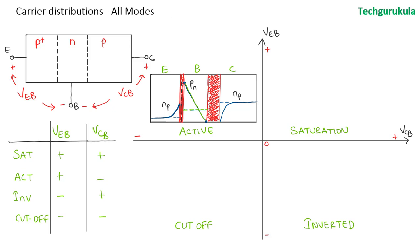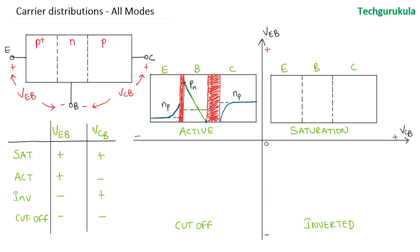Now coming to the saturation region, both the junctions are forward biased, hence the depletion width would be small at both junctions. Equilibrium minority carrier concentrations would be like this, with the dotted line shown here. Under bias condition, we would have the carrier concentration in the emitter similar to that of active. And in the collector region, as this junction is forward biased, there would be a higher concentration of electrons at the junction, and as they go deep into the collector, they get recombined.